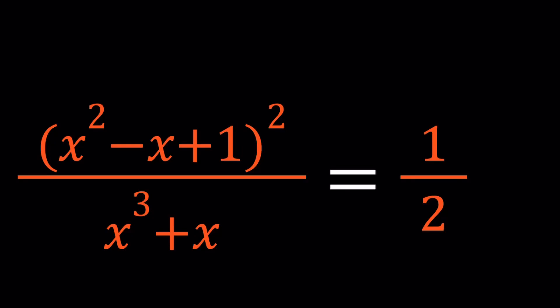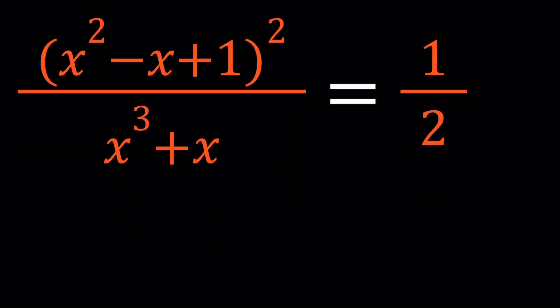Hello everyone. In this video, we're going to be solving a rational equation. We have x squared minus x plus 1 squared divided by x cubed plus x, and that is equal to 1 half. We're going to be solving for x values. I'll be presenting two methods, and let's start with the first one.